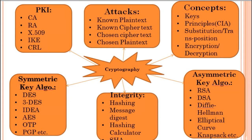There are four basic types of attacks performed on symmetric and asymmetric algorithms: known plain text attack, known cipher text attack, chosen cipher text attack, and chosen plain text attack. These attacks are performed by an attacker, cracker, or hacker.